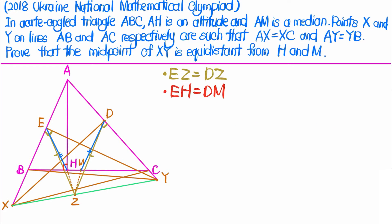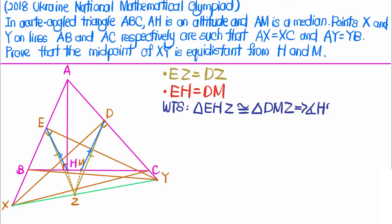Now, to show that the midpoint Z of XY is equidistant from H and M, we can show that triangle EHZ is congruent to triangle DMZ. If we can show this, then HZ equals MZ, which proves our result. By the SAS condition, it suffices to show that angle HEZ equals angle ZDM.